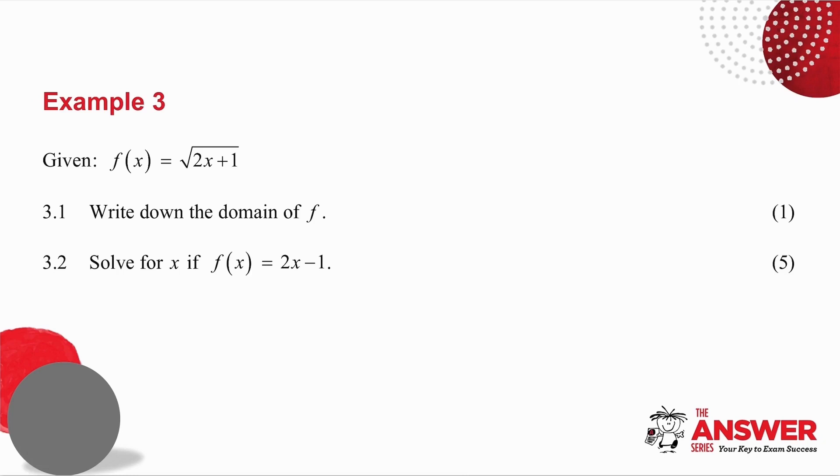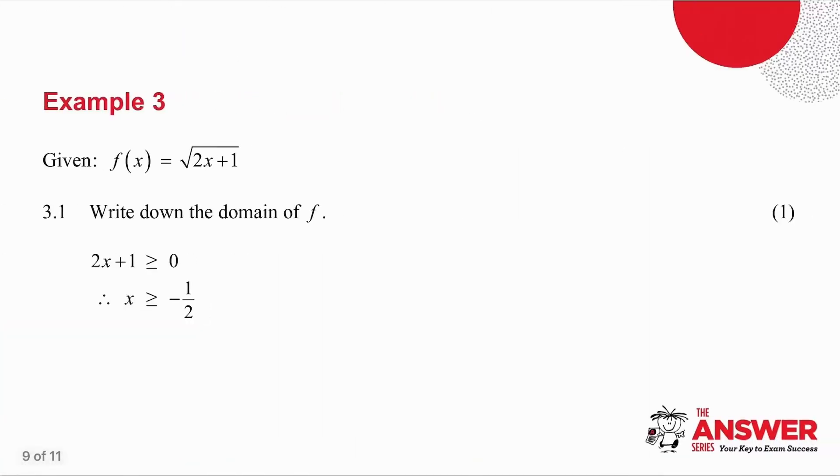Example number 3. I want you to pause the video. I want you to try these two questions and then we'll look at them together. 3.1 says write down the domain of f. Domain, remember, are the possible x values. Now you know that in high school maths we cannot take the square root of a negative. Which means that 2x plus 1 must be greater than or equal to 0. So x must be greater than or equal to minus a half. This question is only worth one mark, which means I can literally write down the answer only.